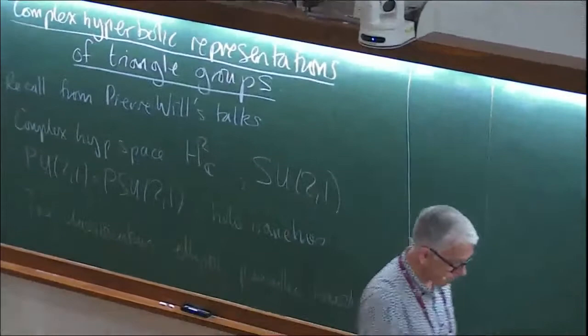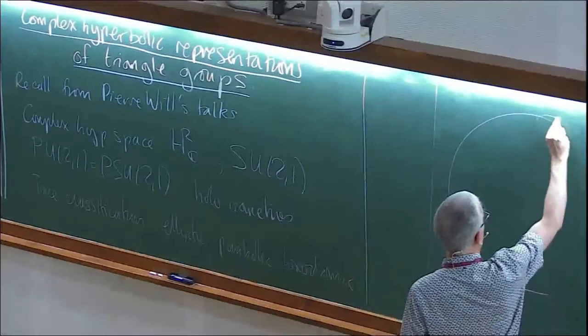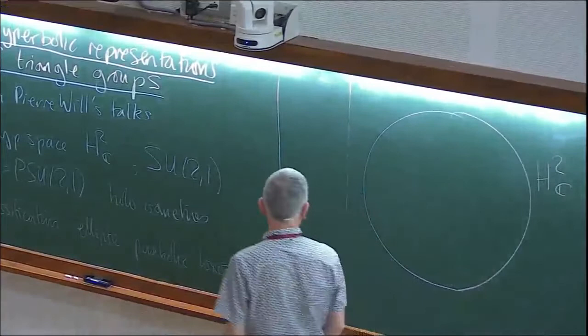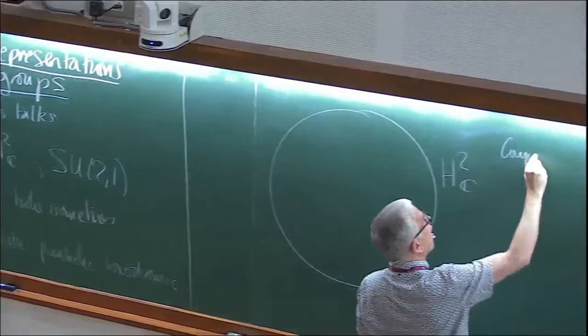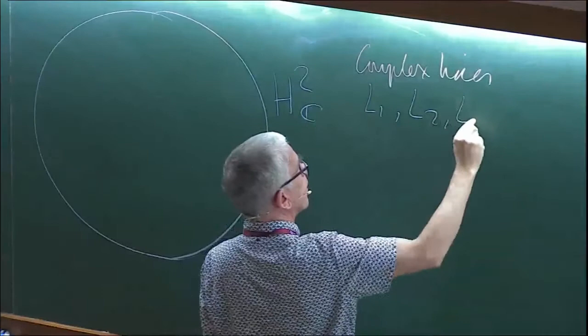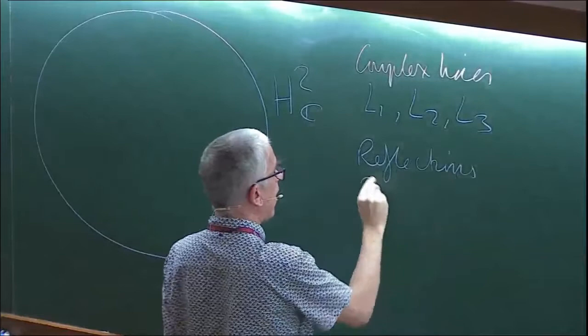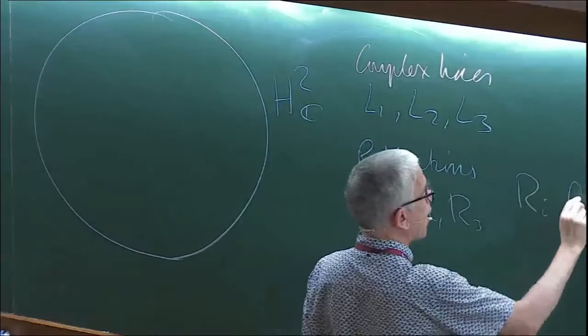Here is my cartoon picture of complex hyperbolic space. I'm going to be thinking about groups generated by reflections, each of which fixes a complex line. So we want to have complex lines L1, L2, L3 and reflections R1, R2, R3 where Ri fixes Li pointwise.